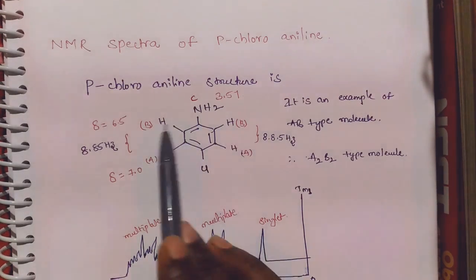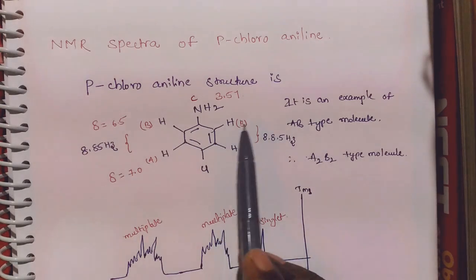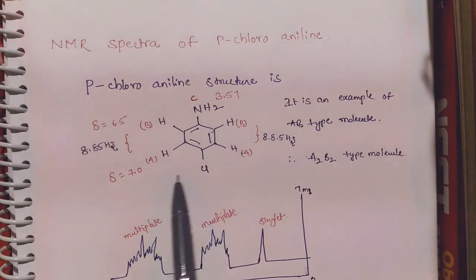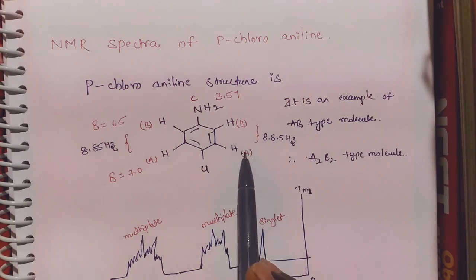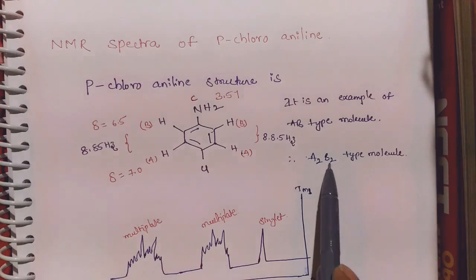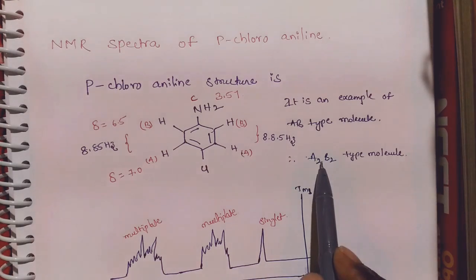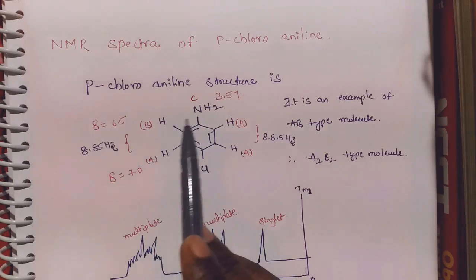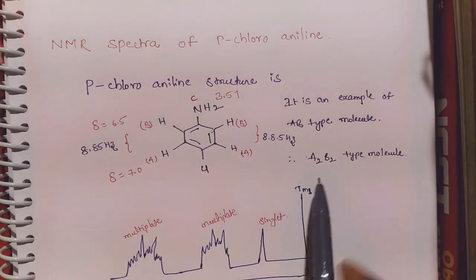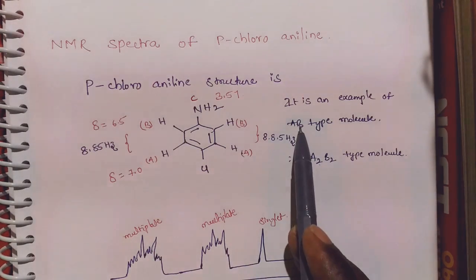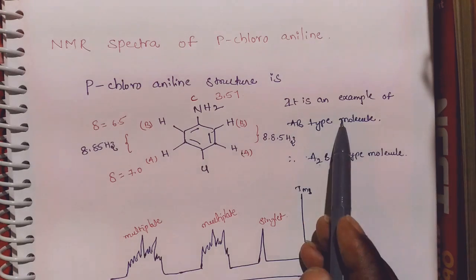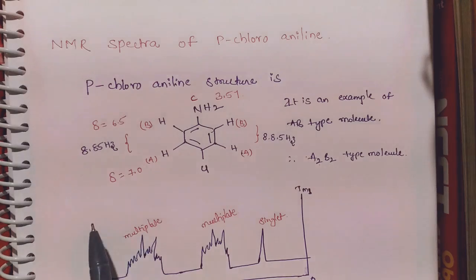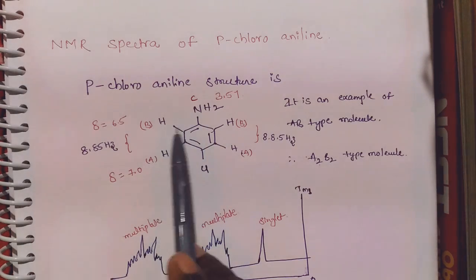Para-chloroaniline is an example of an AB-type molecule. Specifically, it is an A2B2 type molecule, where A-type protons are two and B-type protons are two. So this para-chloroaniline structure belongs to the A2B2 type molecule classification.